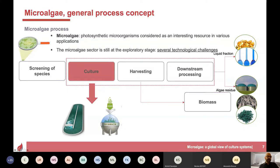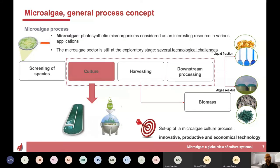We have a big choice of open bioreactors, like the raceway on the left, and closed bioreactors on the right. It's a bit like the difference between big fields and things growing in greenhouses — not a perfect analogy, but somewhat similar. The culture process has to be innovative, productive, and above all economical to build and operate. Economics is really what the real challenge is here.